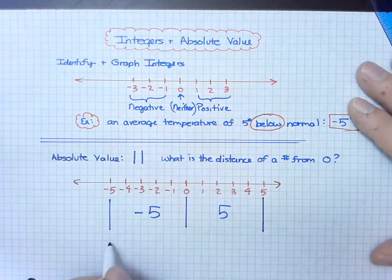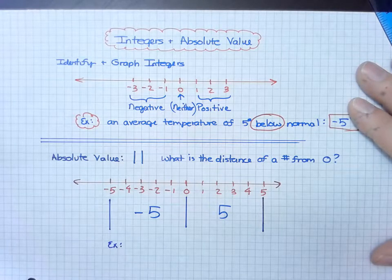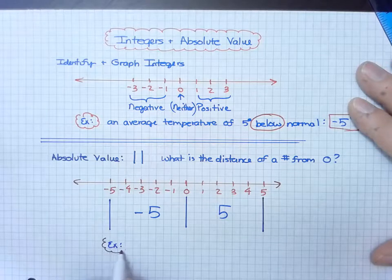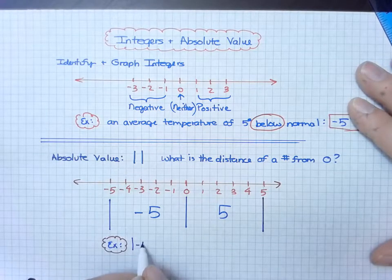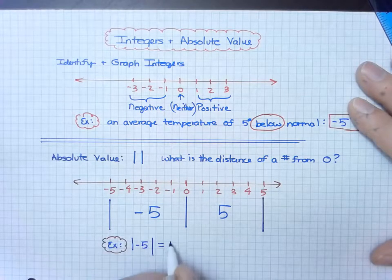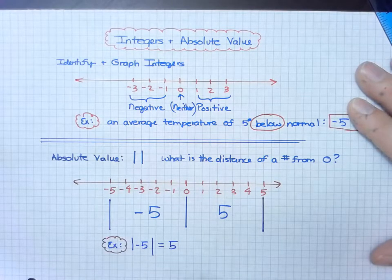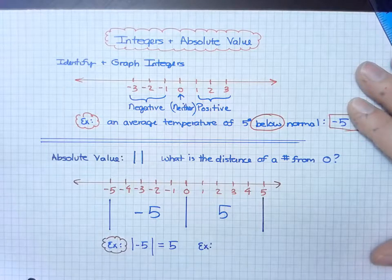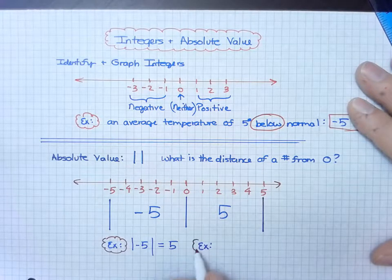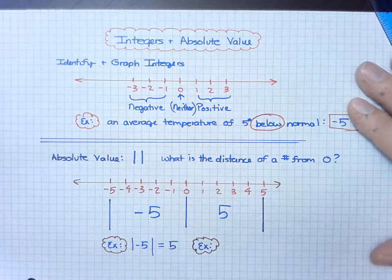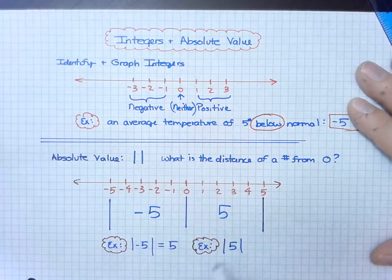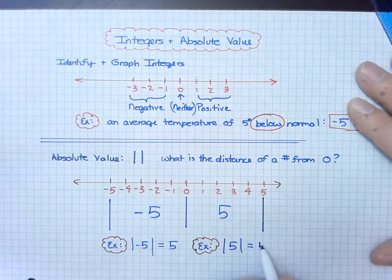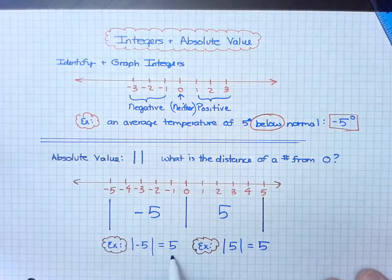In fact, this expresses the two examples I'd like to give. The absolute value of negative five is five units away from zero. And in this example, the absolute value of a positive five is five units away from zero. Notice how they are both positive.